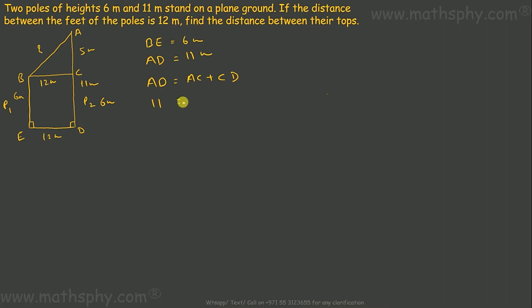11 is equal to AC plus CD. CD is 6 meters, so I'll write here BE is equal to CD.